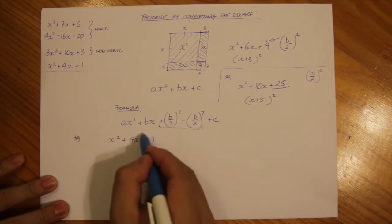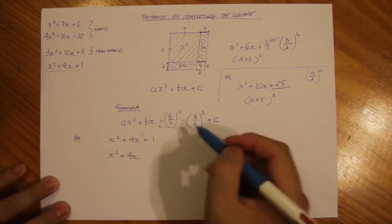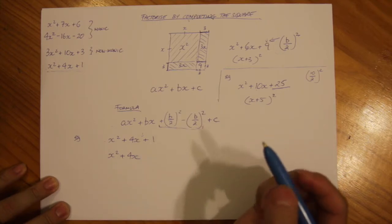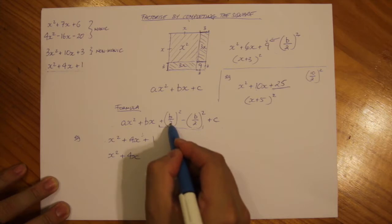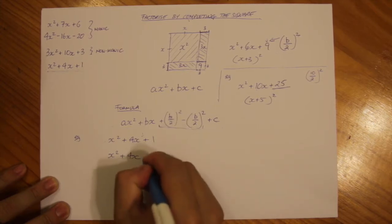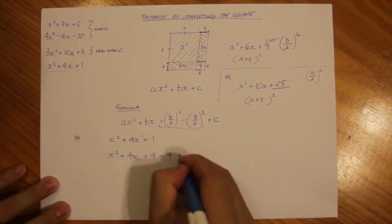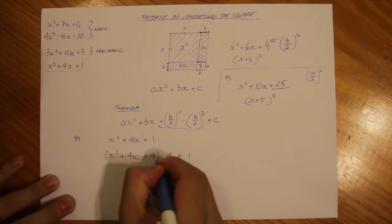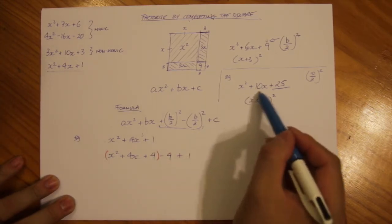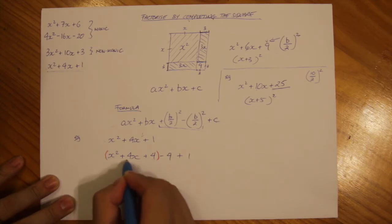I'm going to add this section into the equation. I'm leaving x squared plus 4x the same. Now I'm going to add the two balancing parts. b is 4, so 4 divided by 2 is 2, and 2 squared is 4. So I'm going to add 4 and then subtract 4. c is 1, so I add 1 on the end. What you'll find is that these first three terms form a perfect square. Factors of 4 that add up to 4 are 2 and 2, so we have x plus 2 all squared.